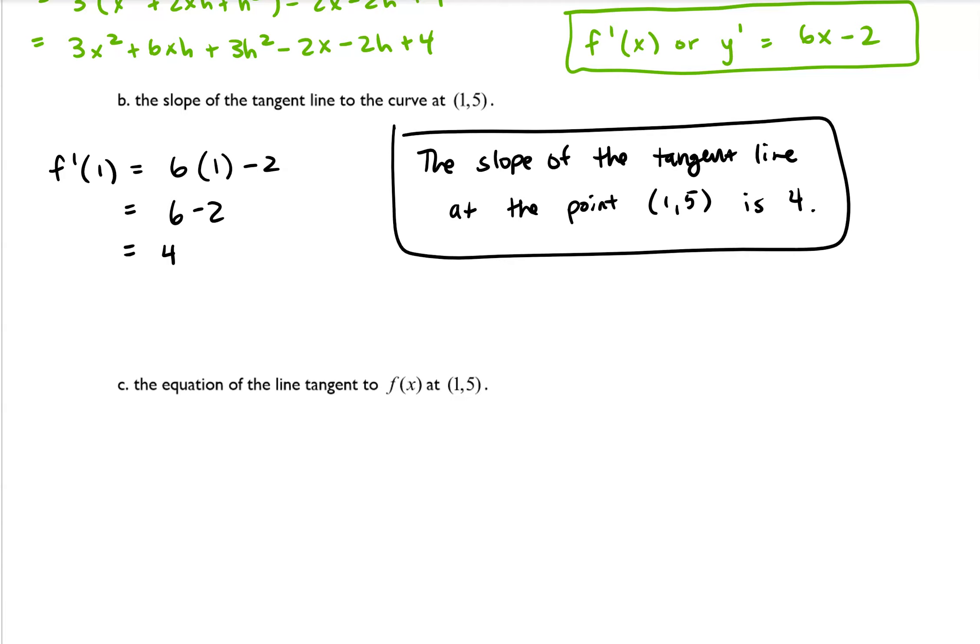Part C says the equation of the line tangent to f(x) at (1,5). So recall there are a couple of different ways that you can write a line. So you could write a line in the form y equals mx plus b. This is called slope intercept form.